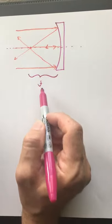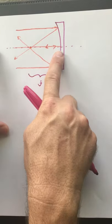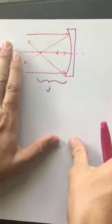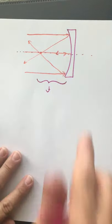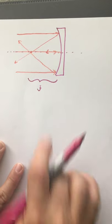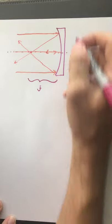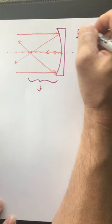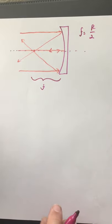If I make that assumption, it turns out there's a really nice relationship between the focal length and the radius of the sphere. There's a really simple relationship if this is actually a spherical mirror: the focal length is equal to half the radius. So this is the case we're going to treat.